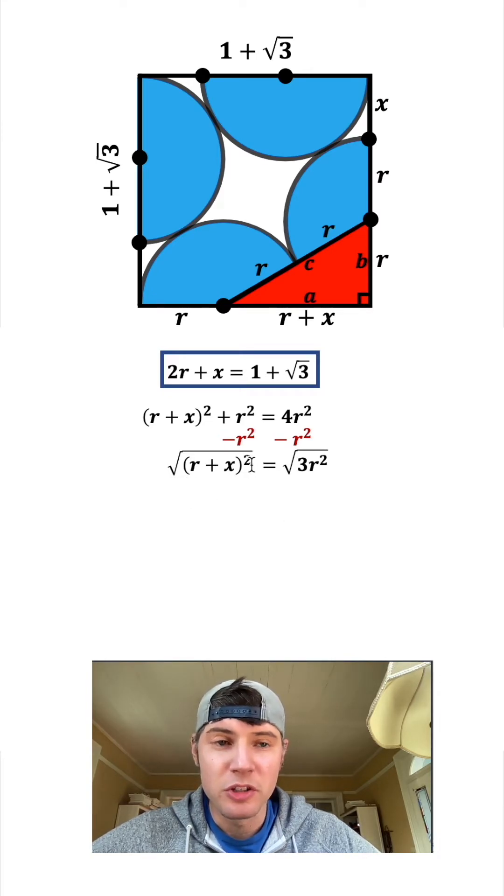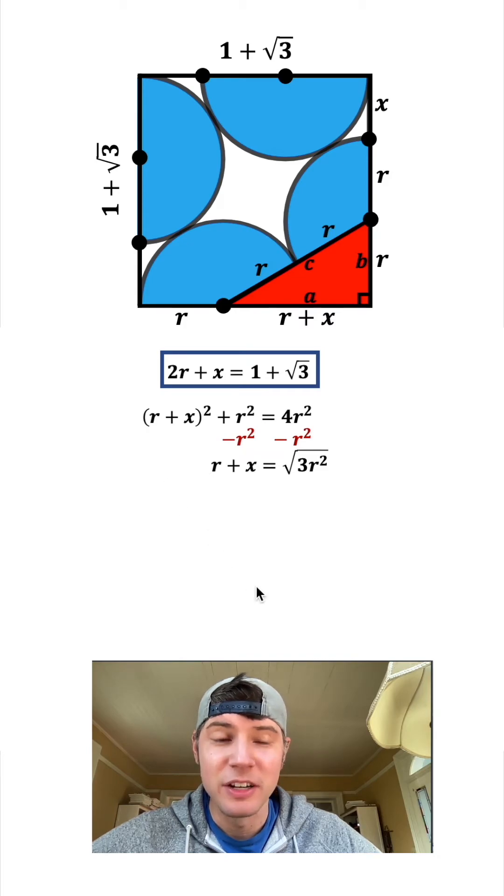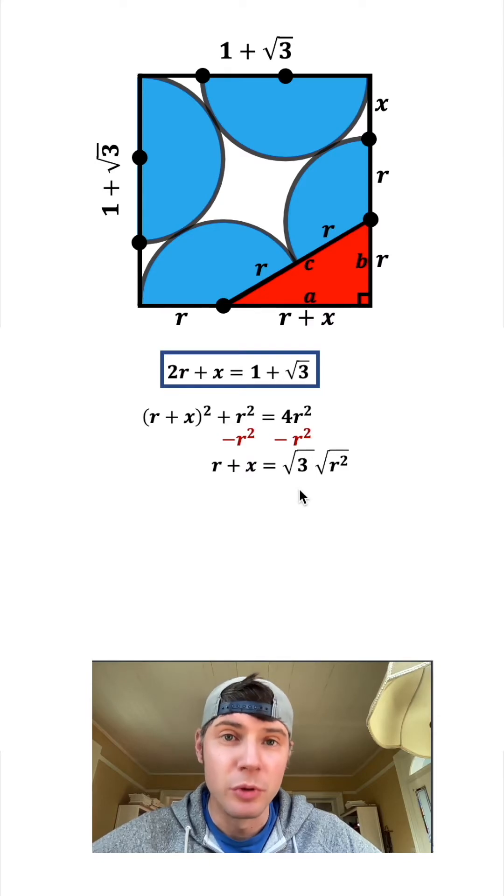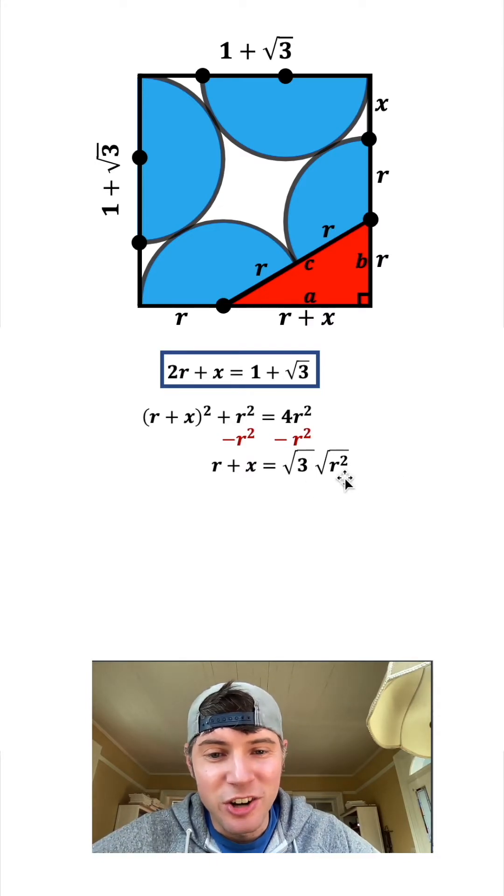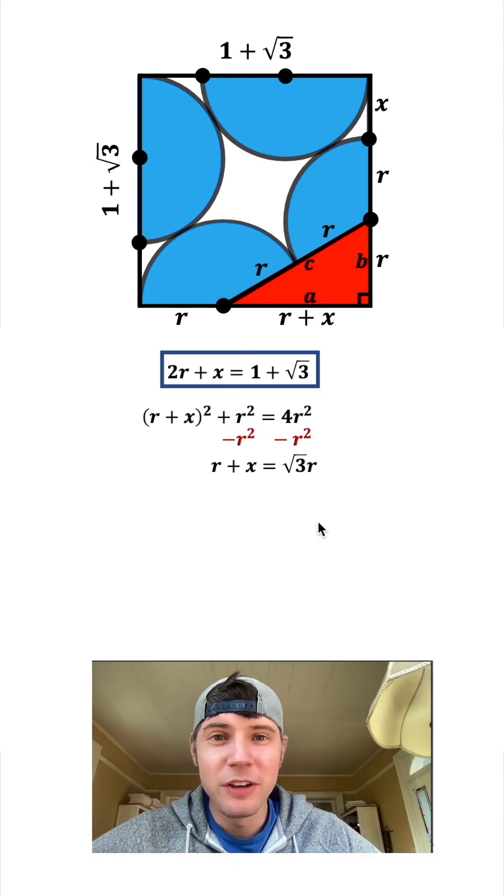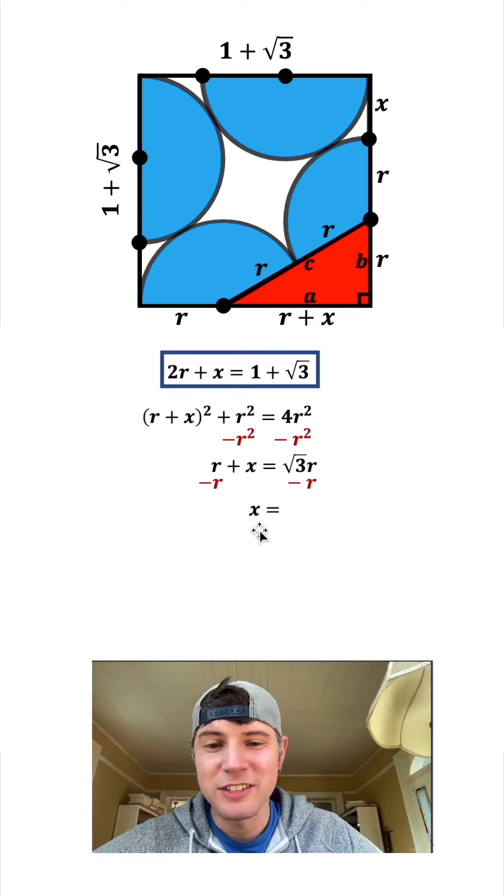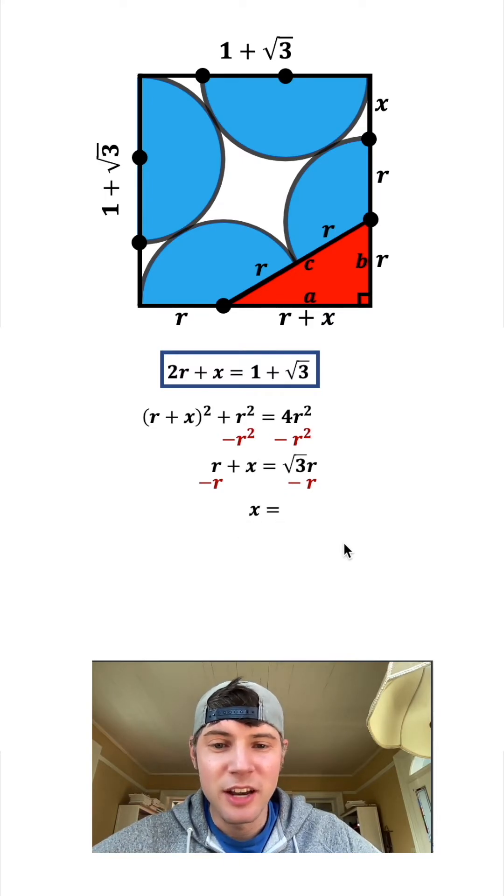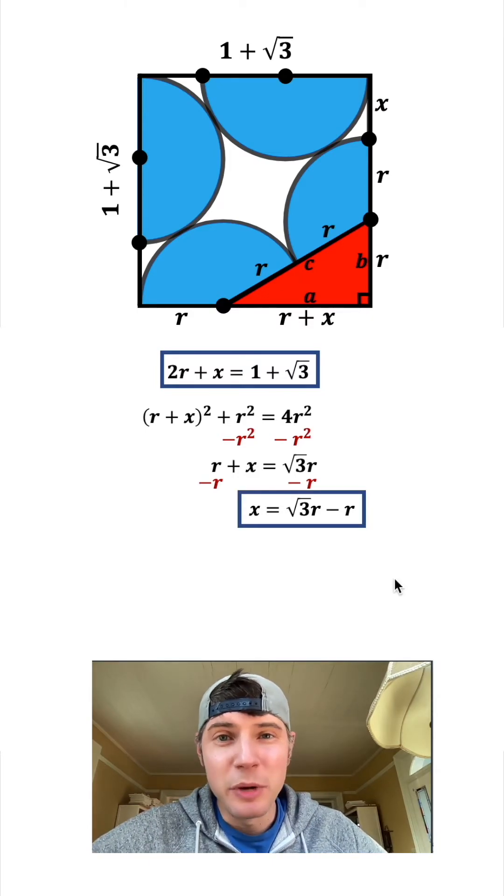Square root of R squared is R, so this is square root 3 times R. Subtracting R from both sides gives us X equals square root 3 times R minus R. Now we've solved for X in terms of R, so let's substitute this value back into our original equation.